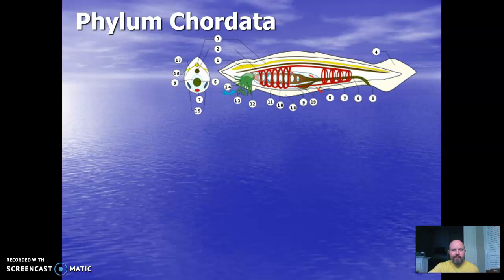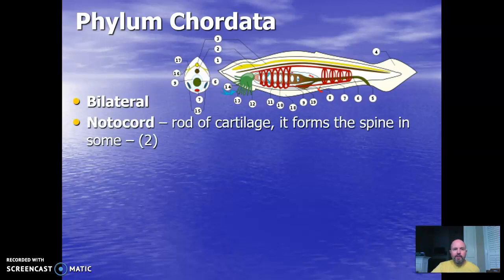Now let's summarize phylum Chordata. Chordates are bilateral organisms. They all have notochords — a rod of cartilage that forms parts of the spine, the cartilage between our backbones. In some, it is the only support structure running down the back of the animal. They have a dorsal neural tube — basically a spinal cord — which is different from annelids, which have a nerve running down both the dorsal and ventral sides.